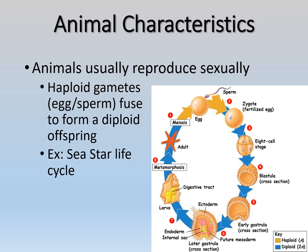As an example, we have the sea star life cycle. Sea stars — or starfish, as some call them, though they are not fish; they are echinoderms — adults undergo meiosis and produce haploid gametes, the eggs and sperm. These are fertilized and turn into a zygote, which becomes a new sea star. So even seemingly simple organisms like sea stars undergo sexual reproduction.